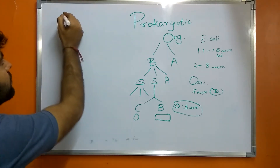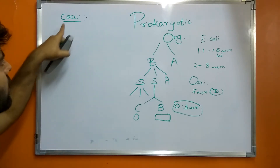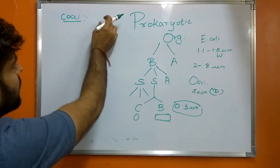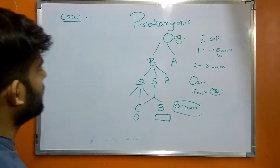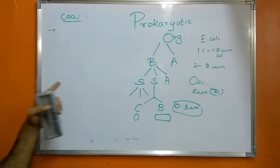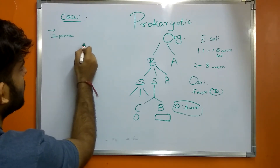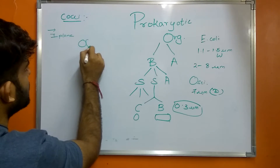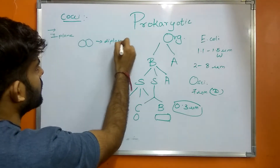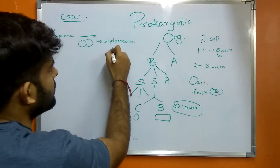Cocci are roughly spherical cells — they may not be only spherical; they may be oval, elongated, or flattened at one end. Regarding division, I will talk in planes to simplify. If a cell divides in one plane and forms a pair, it is known as diplococcus. The example is Neisseria.